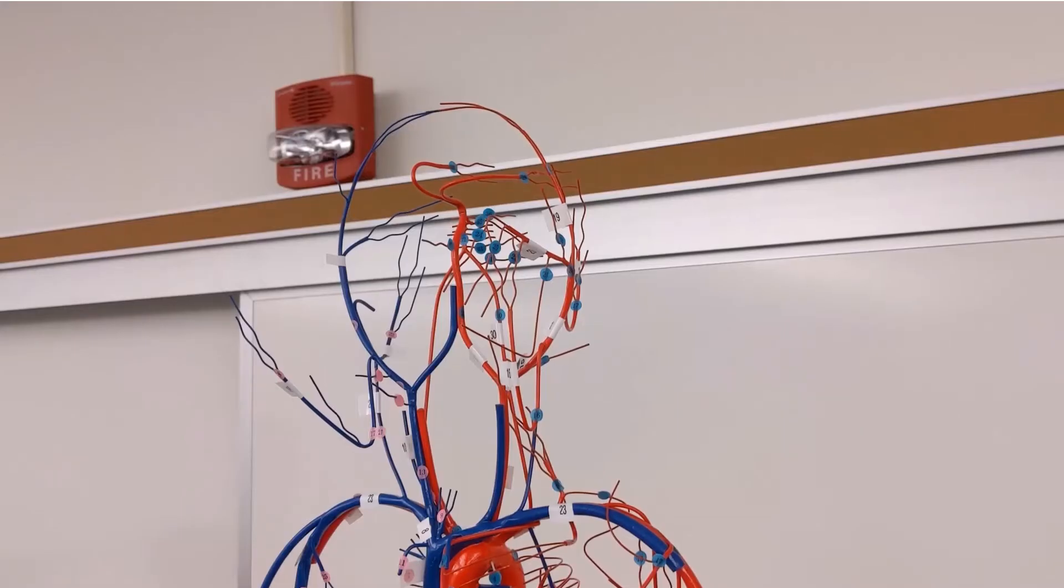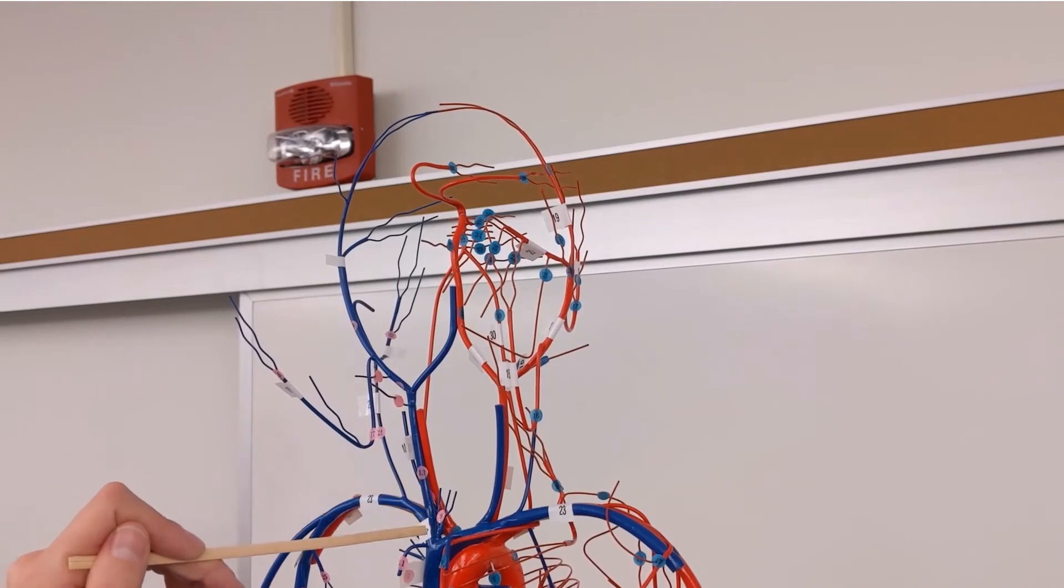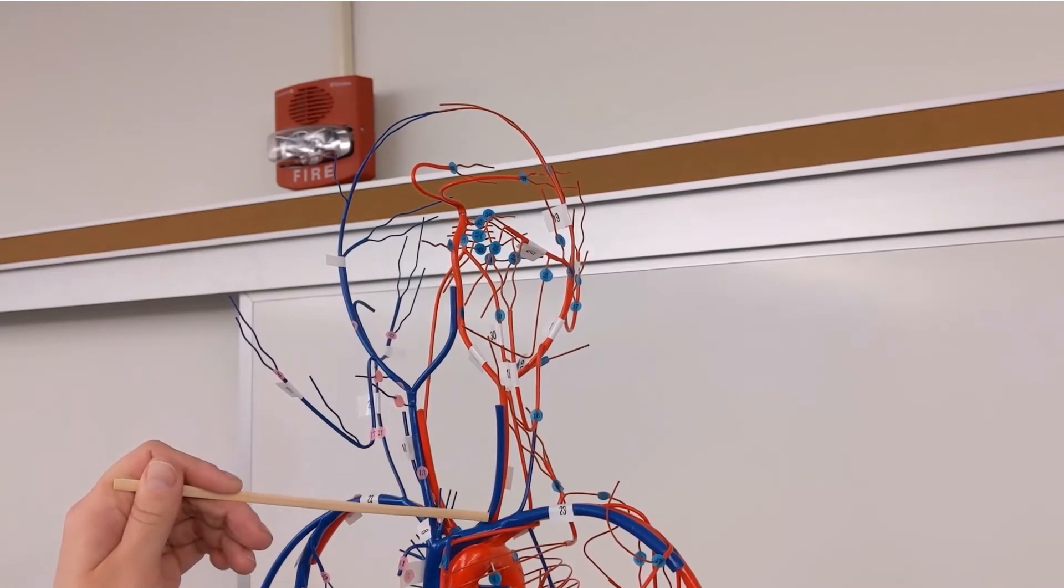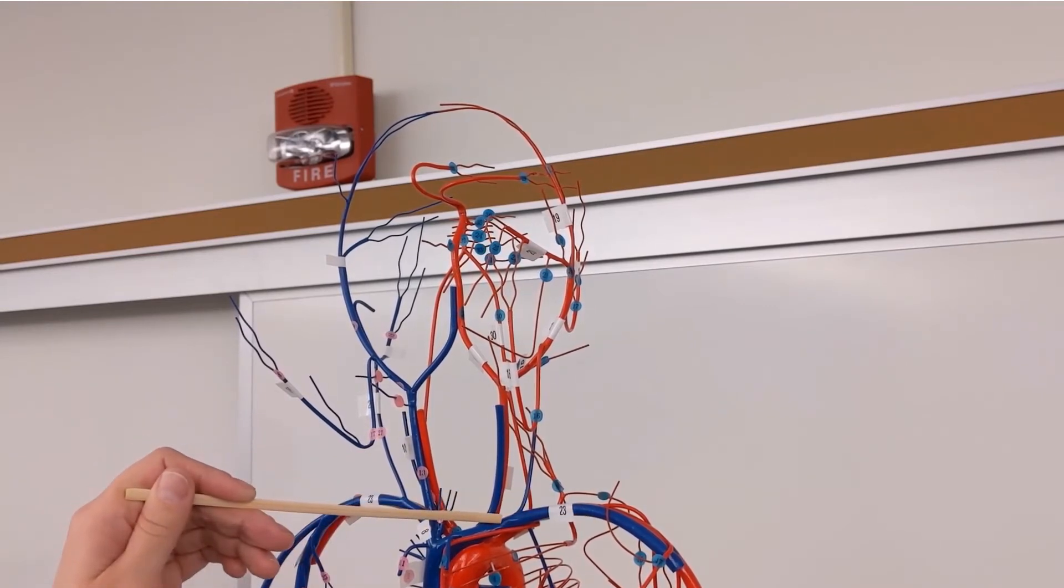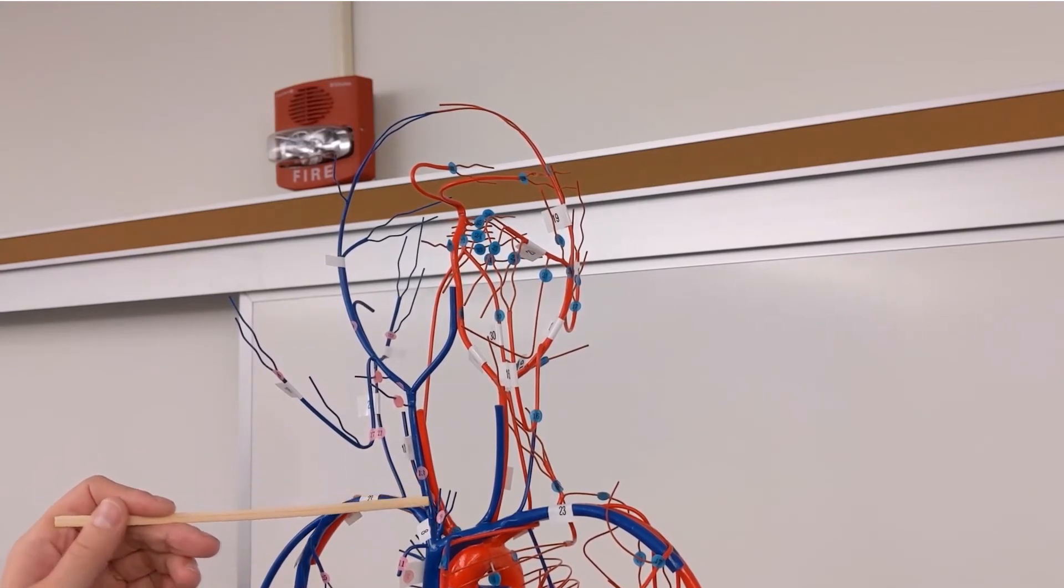So on Wireman we can see the internal jugular here and it continues down until it meets the subclavian to turn into the brachiocephalic vein. So internal jugular, subclavian, brachiocephalic vein. So the external jugulars are here. That's external jugular, that's external jugular.